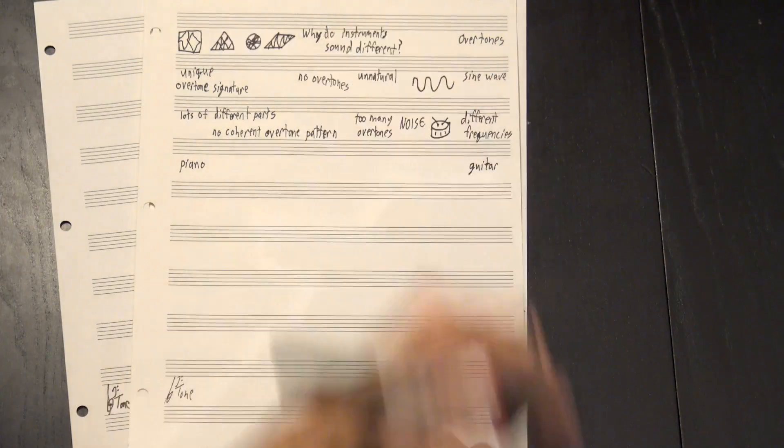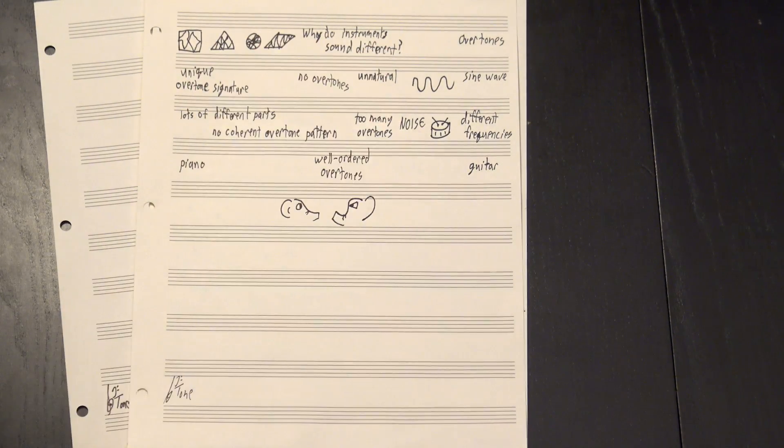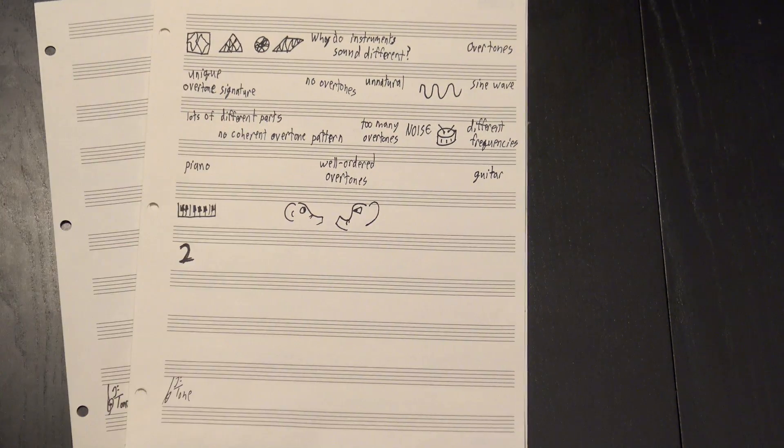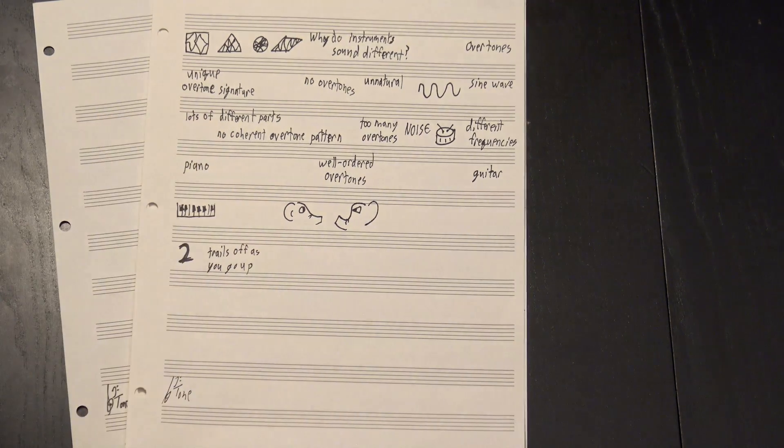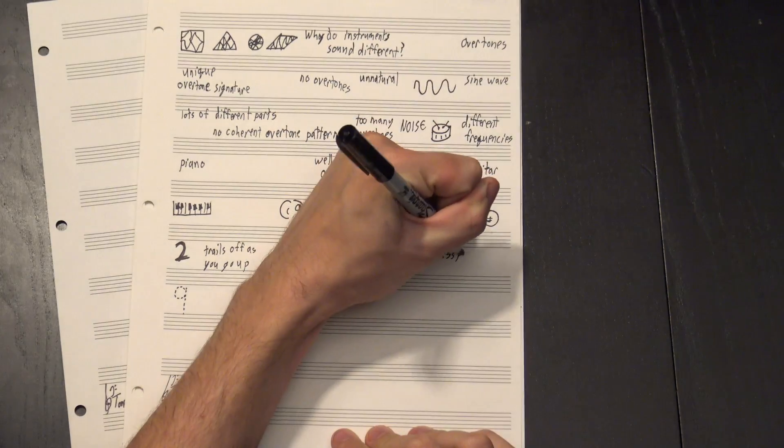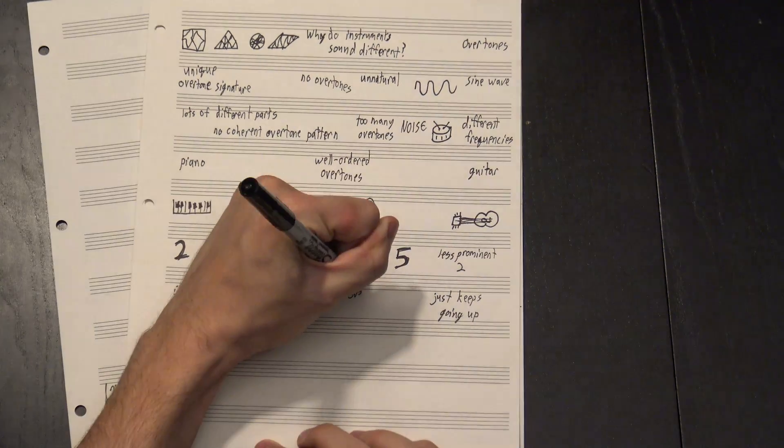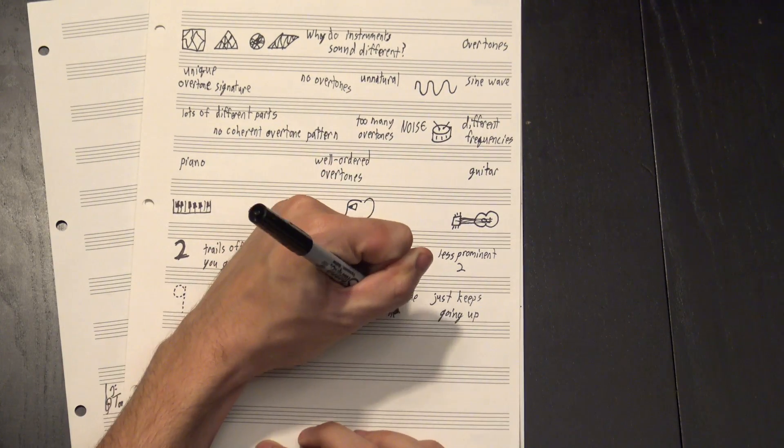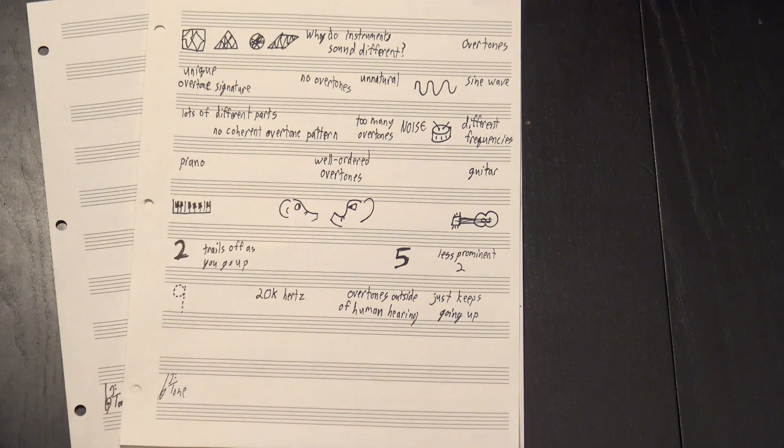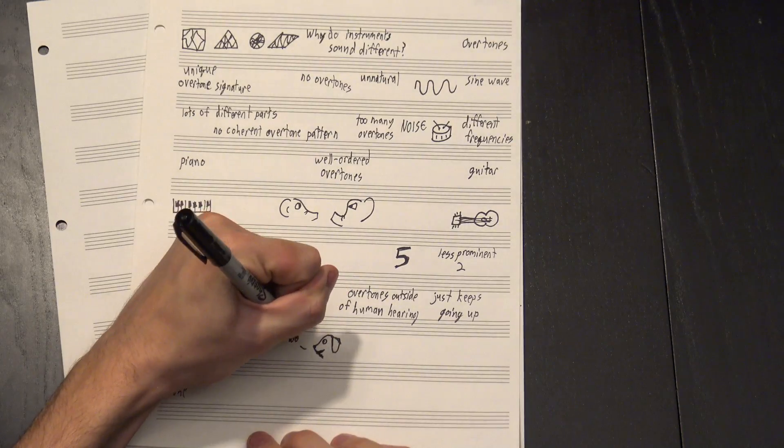The piano and the guitar, on the other hand, both have well-ordered overtone sequences, but they look pretty different. The piano has a spike on the second harmonic, then trails off pretty quickly as you go up, mostly dying off by the ninth. The guitar, on the other hand, has a less prominent second, a spike at the fifth instead, and it just keeps going up with detectable overtones outside the range of normal human hearing around 20,000 hertz. Which means that dogs can appreciate guitar in ways that you and I can't. Good work, dogs.